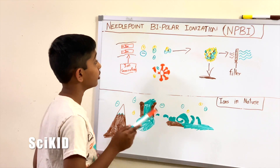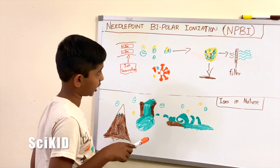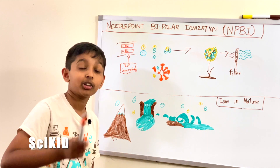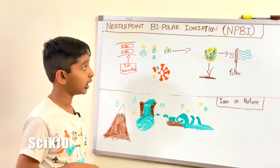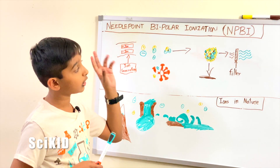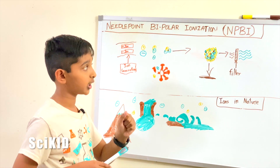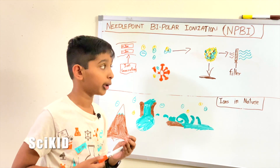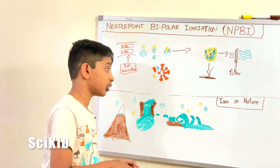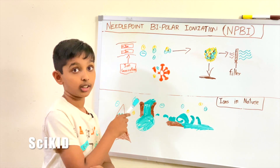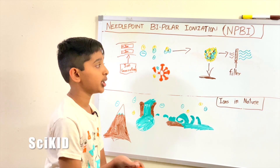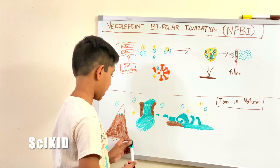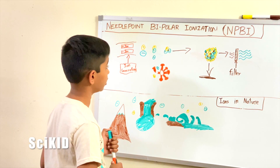Now they have a total negative charge, so they attract another positive ion. And this process continues on and on. In the process, lots of particles of dust are collected by the clump of ions. And eventually, the clump of ions and particles of dust is big enough to either fall to the ground due to gravity and unsuspend from the air, or get captured by a filter and have the dust particles filtered out.